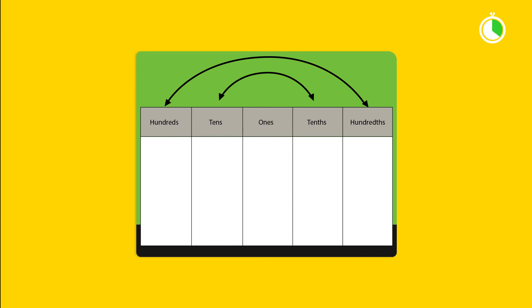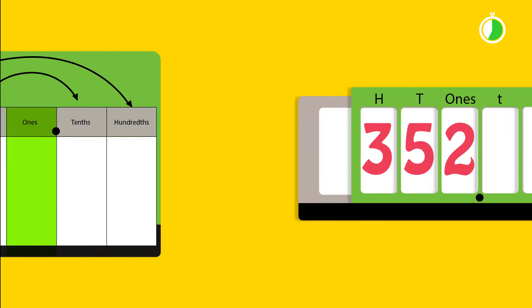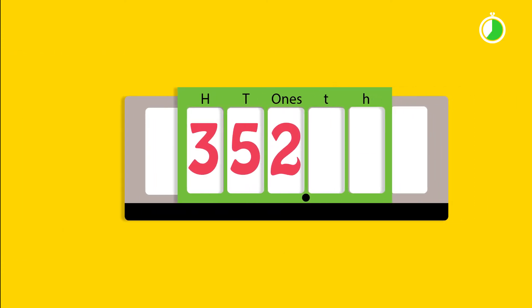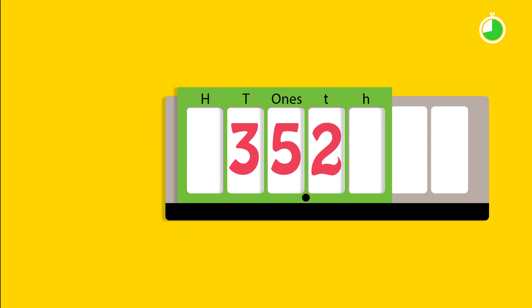Technically, the decimal point does not move. Its purpose is to signify the location of the ones place, which is the center of our symmetrical place value system. Then how should I describe what happens when I divide by 10? Try using a place value slider. To divide the number by 10, we need to move all digits one place to the right.